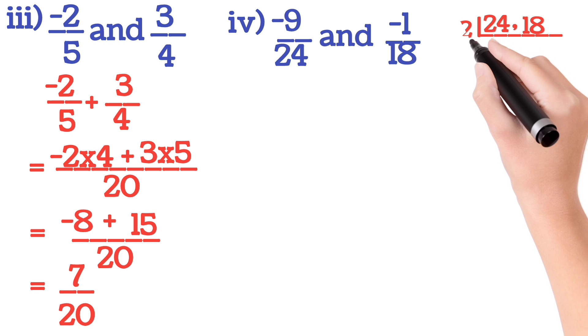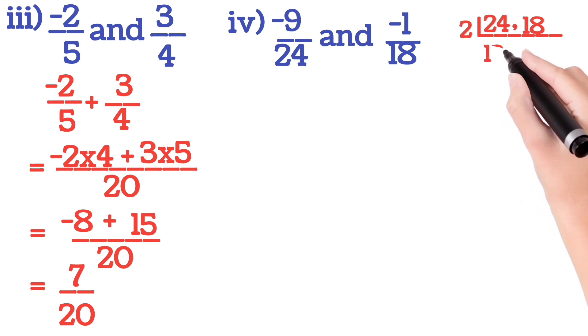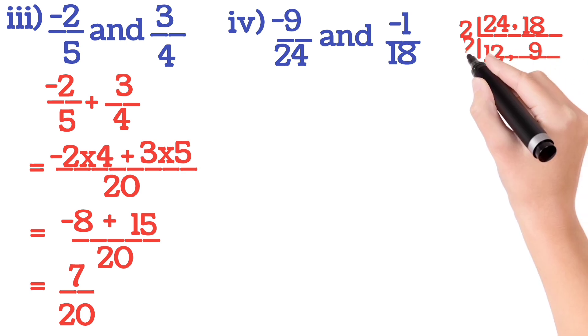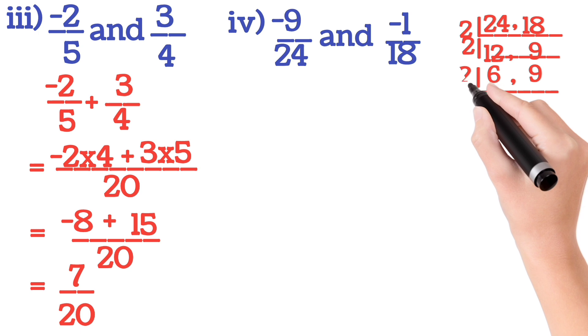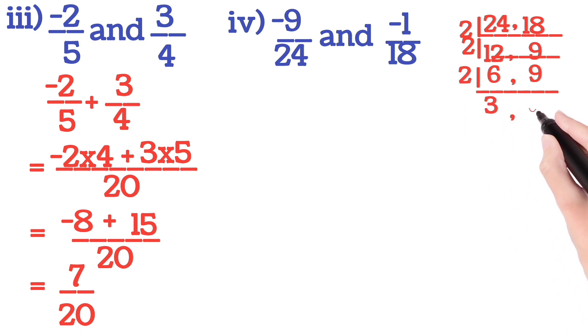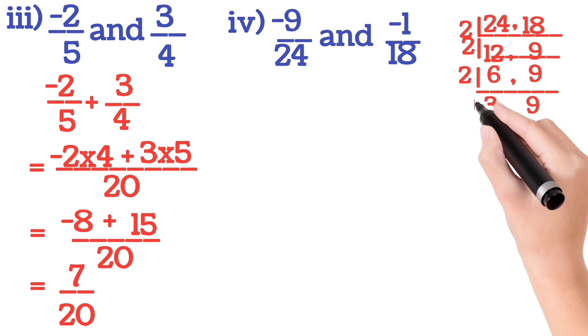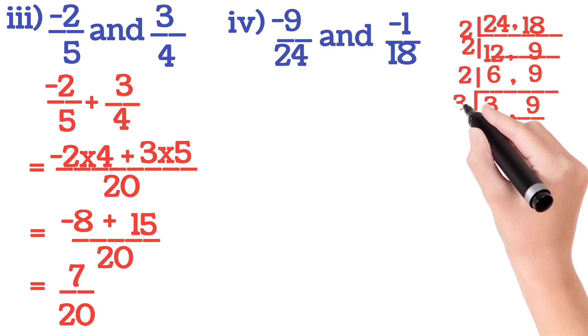Both are divisible by 2, so you will use 2. 2 12s are 24 and 2 9s are 18. Again 2, 2 6s are 12 and 9 is not divisible by 2, so 9 will come as it is. Again 2, so 2 3s are 6 and 9 we will write as it is.